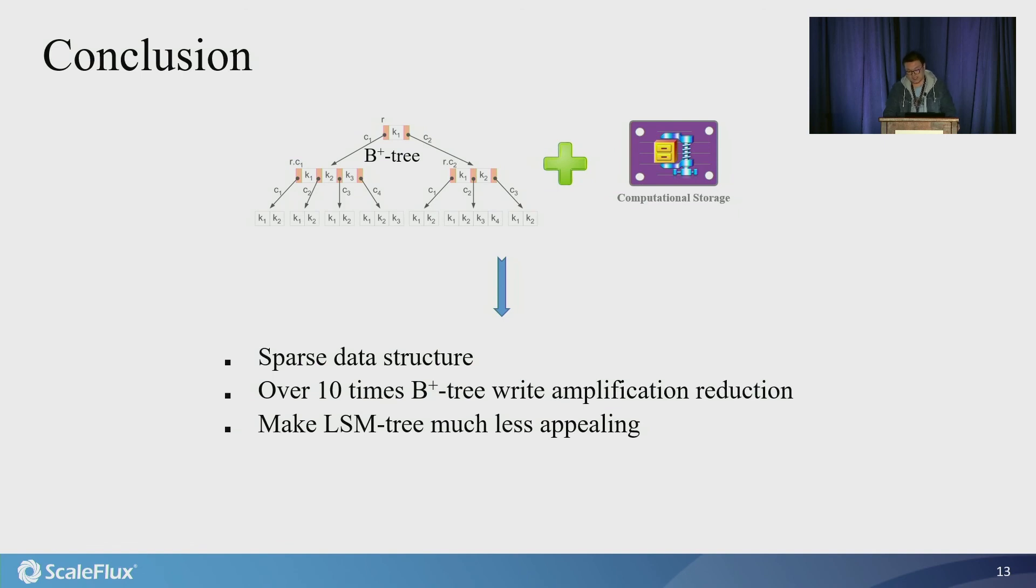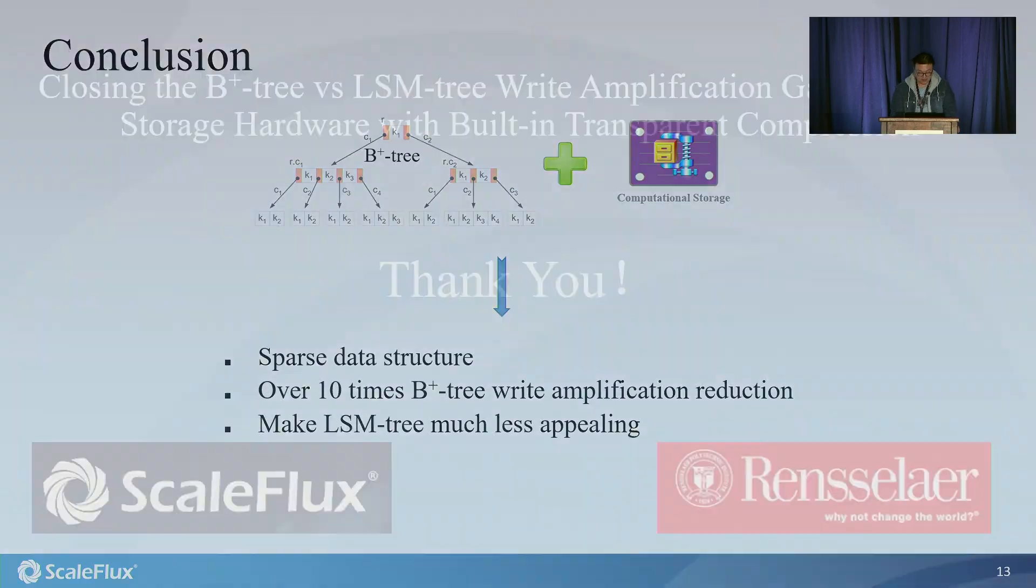So this work suggests that the arrival of such new storage hardware warrants a revisit on the comparison of B+ tree and LSM tree in future data management systems. And with the new storage hardware, B+ tree can use sparse data structures without sacrificing the true physical storage cost. It can reduce B+ tree write amplification over 10 times and make LSM tree much less appealing. Thank you.